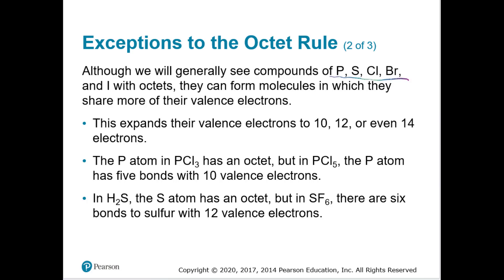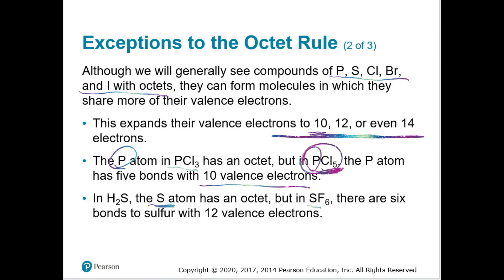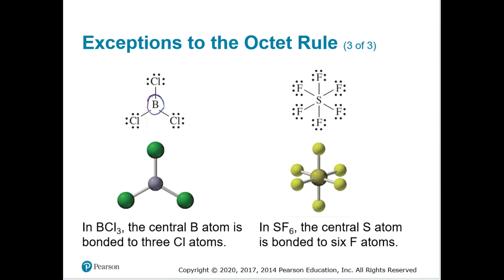Compounds of phosphorus, sulfur, chlorine, bromine, and iodine can form molecules where they share more electrons, expanding their valence electrons to 10, 12, or even 14. The P atom in PCl3 has an octet, but in PCl5, phosphorus has five bonds with five chlorines, giving it 10 valence electrons. In H2S the S atom has an octet, but in SF6, with a central S and six fluorines, sulfur has 12 valence electrons from six bonds.